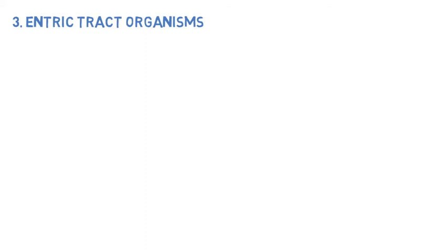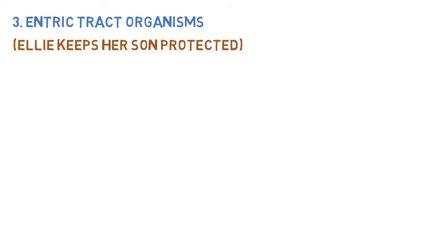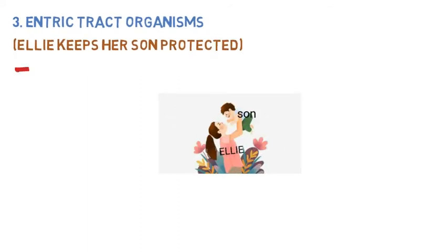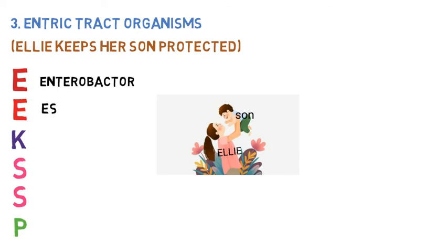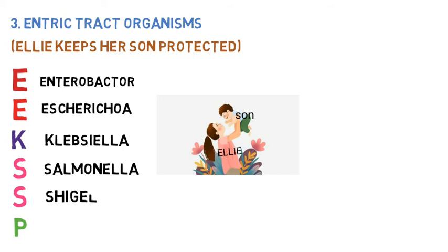Enteric bacteria exist in the intestines of animals and humans. Sometimes, being the normal flora, they protect the enteric tract against pathogens. In the same way, 'Ellie keeps her son protected' is the mnemonic. This class includes Enterobacter, Escherichia, Klebsiella, Salmonella, Shigella, Serratia, and Proteus.